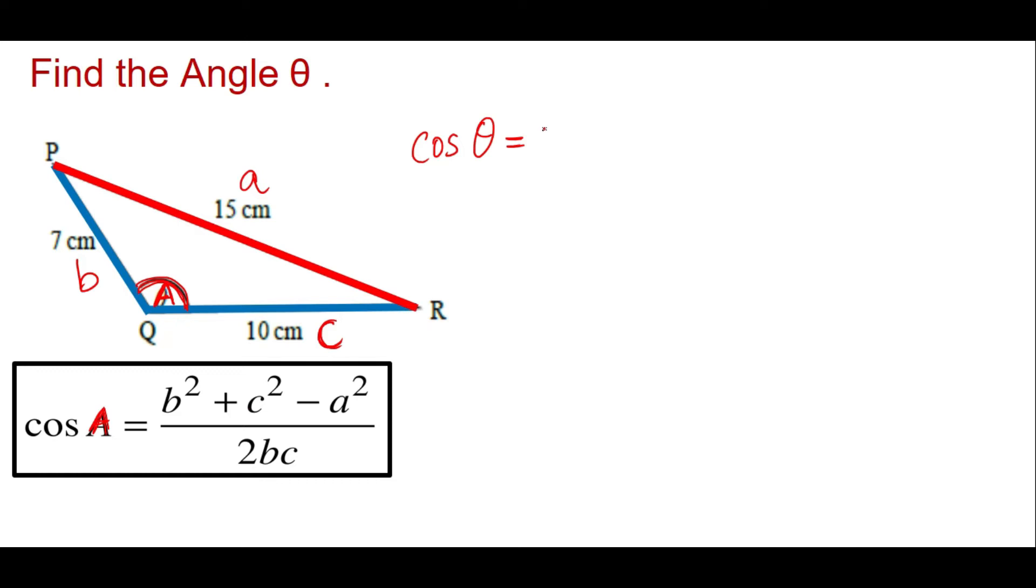So b squared, I'll say 7 squared plus 10 squared minus the side, the red side which is 15 squared, over you have 2 times b, c. b, c are the blue lines which is the arms of the missing angle 7 times 10. So I hope now it's easier.